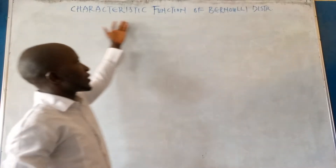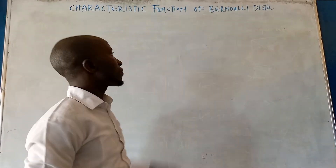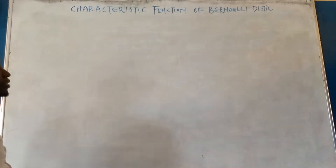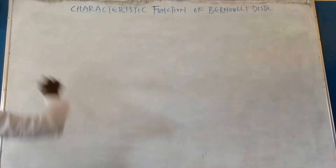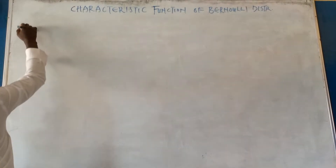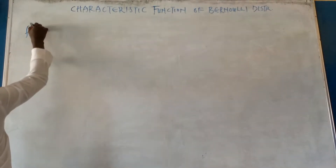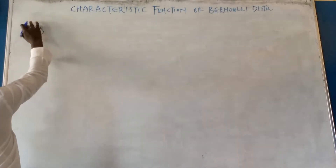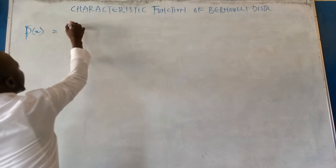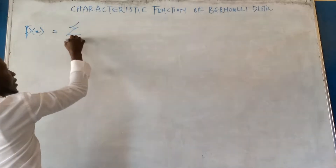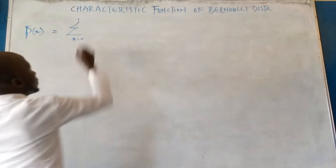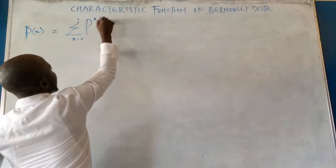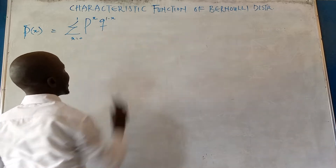Today we will be looking at the characteristic function of the Bernoulli distribution. The probability mass function of the Bernoulli distribution is as follows. So P of X equals summation where X comes from 0 to 1, P raised to power X and Q raised to power 1 minus X.